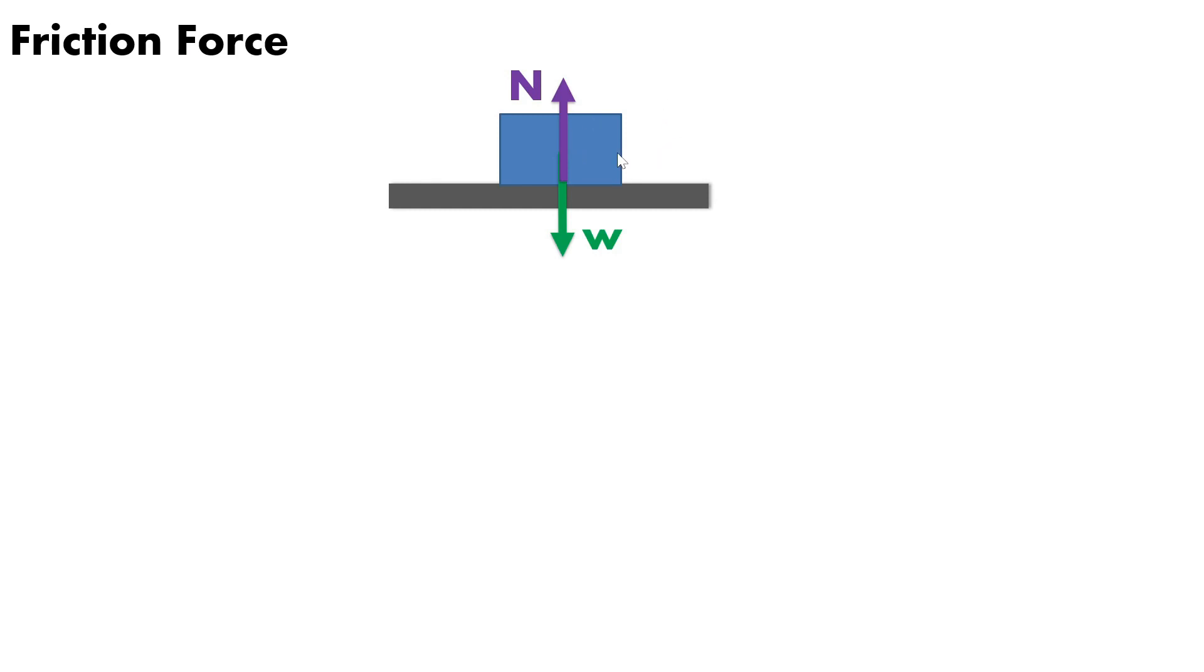If we will try to slide our object going to the right, there is another force that is applied by our surface, which is what we call the frictional force. The direction of the frictional force is going to the left because frictional force is always opposing to the sliding. If our object is going to the right, the frictional force is going to the left. If our object is going to the left, the frictional force is going to the right.